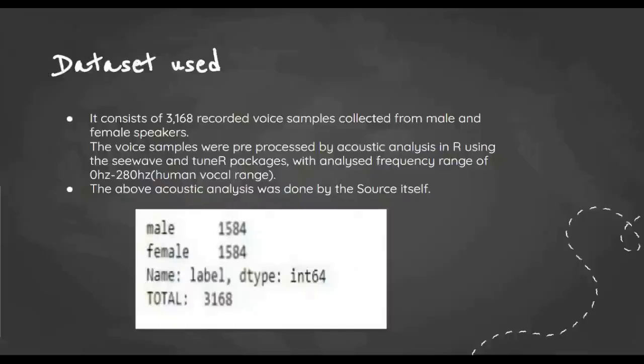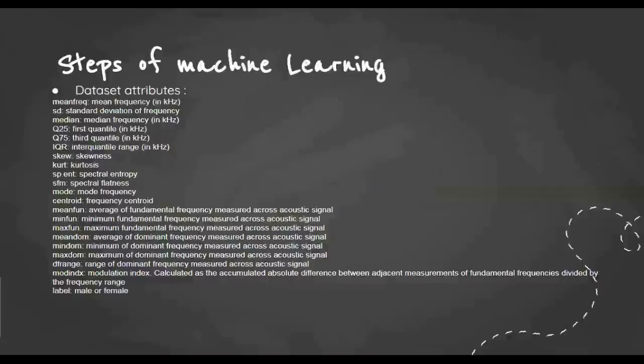The dataset attributes: There are 21 attributes. First is mean frequency which is in kilohertz, then standard deviation of frequency, median frequency, Q25 which is the first quartile (the median of the first upper part of the set), and the third quartile which is the median of the second lower part of the set, and IQR interquartile range which is the difference between Q3 and Q1.